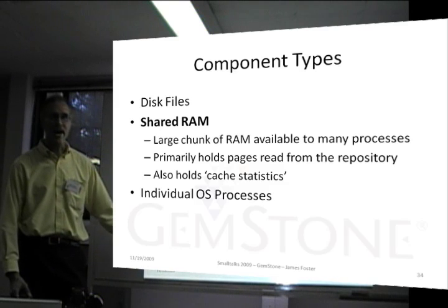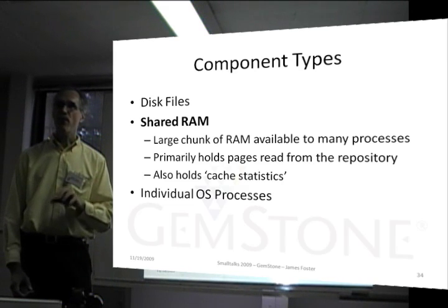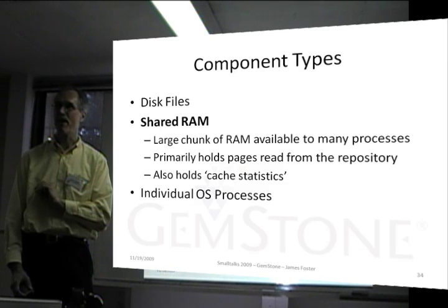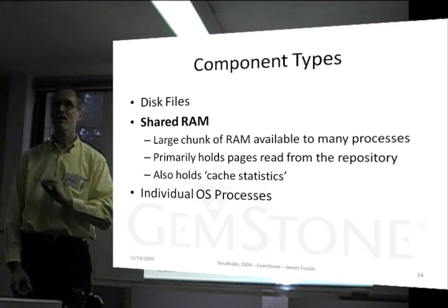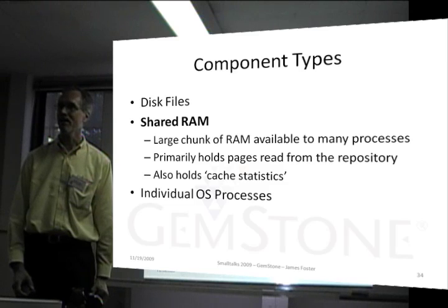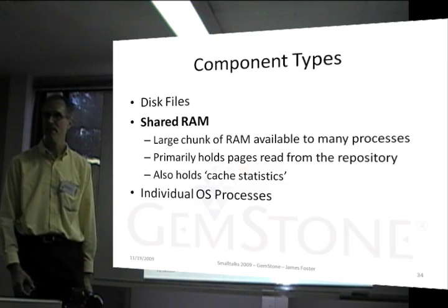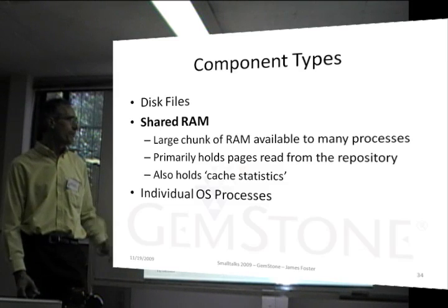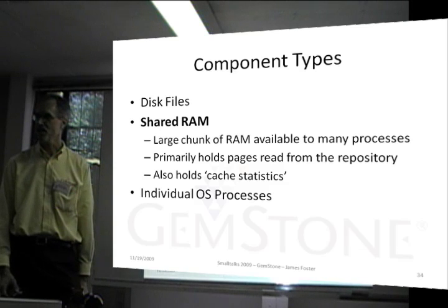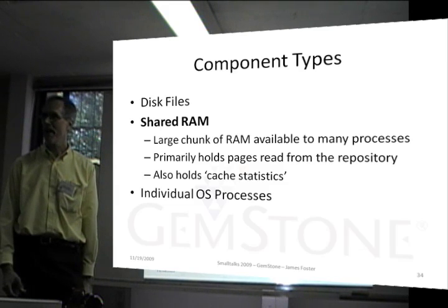Things that are in memory: we have shared RAM. We read objects from disk in 16K pages. Rather than each virtual machine having to read it for itself, pages can be read into a shared space in memory that is visible to each of the virtual machines. Each virtual machine can look into the shared memory and see the objects there. That way multiple virtual machines can share a large chunk of memory.